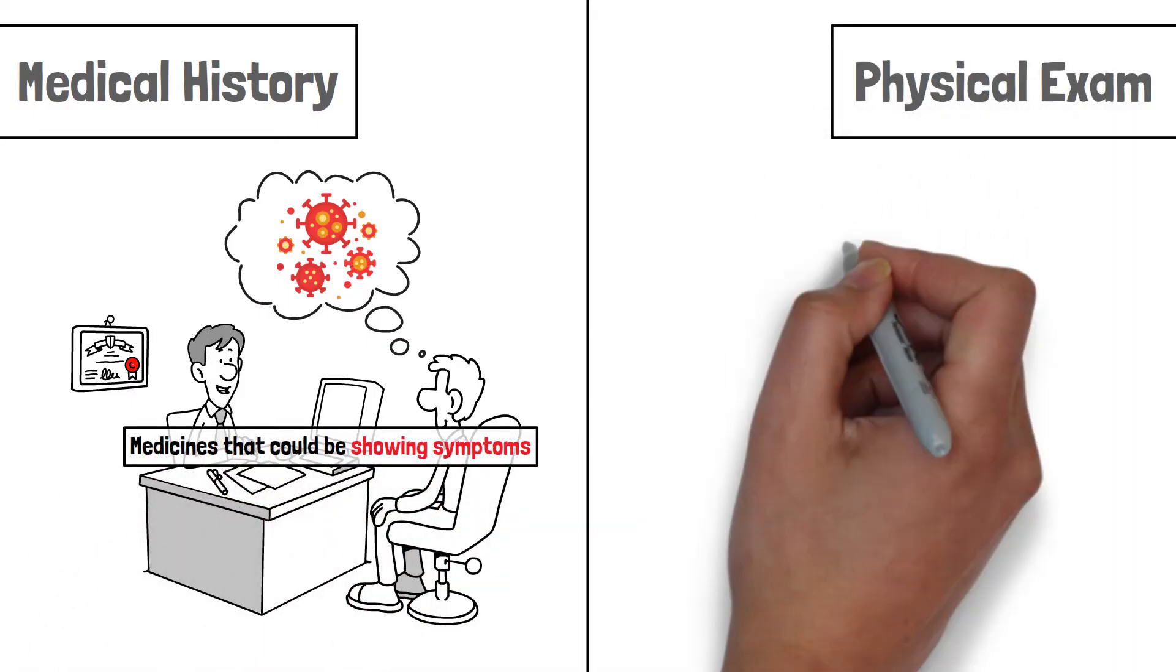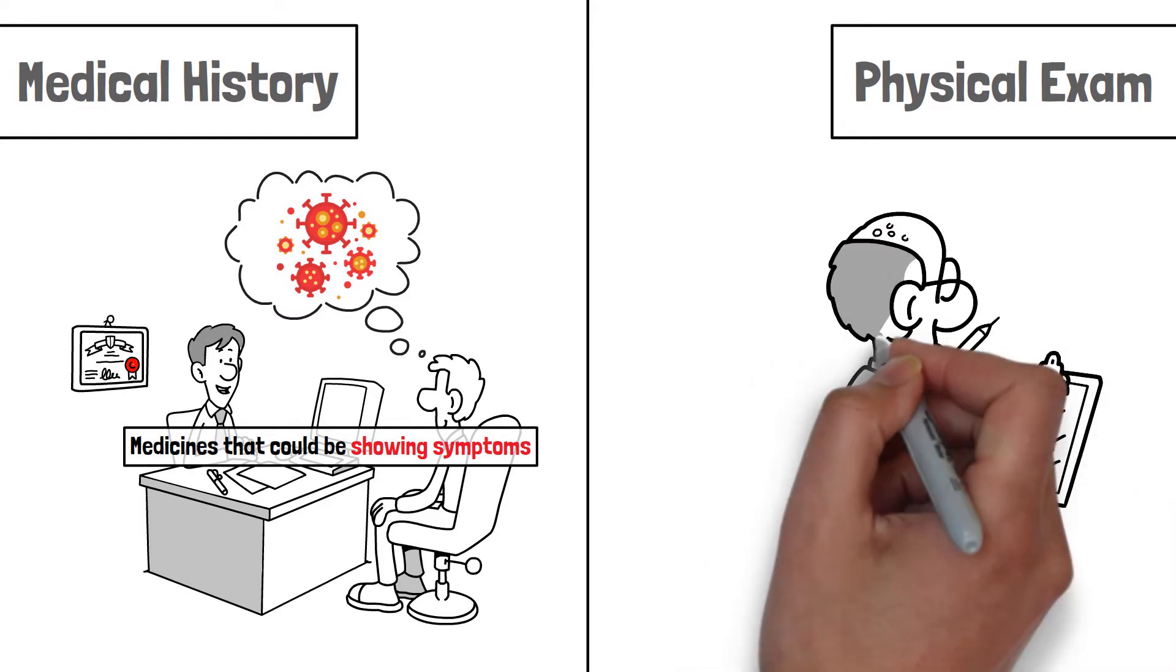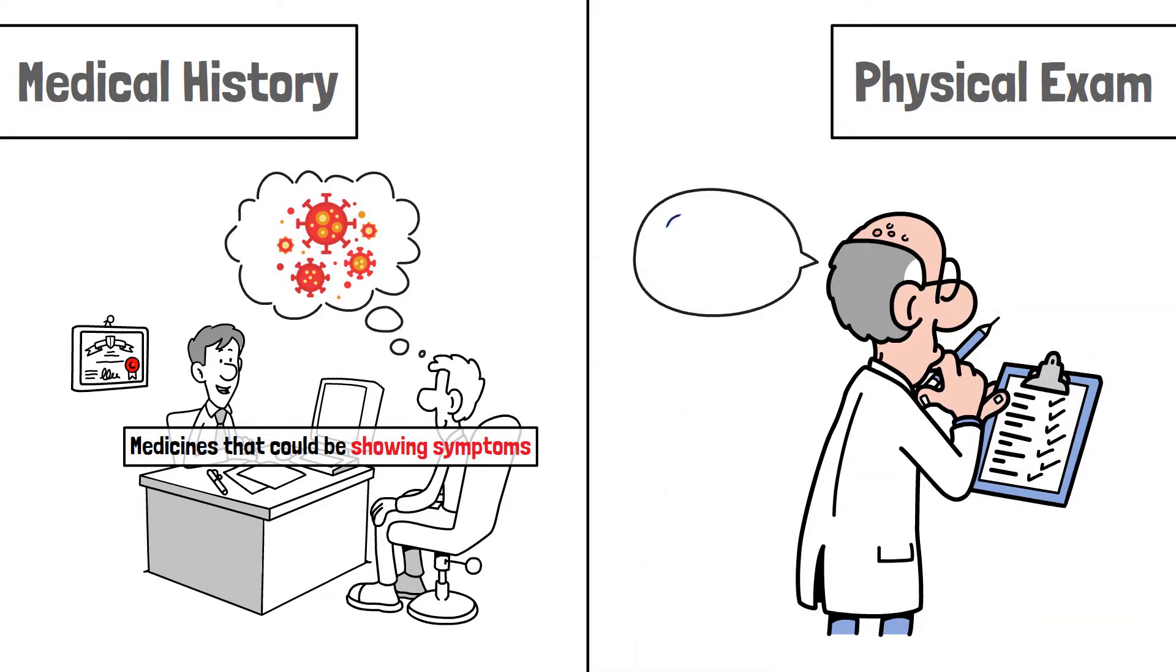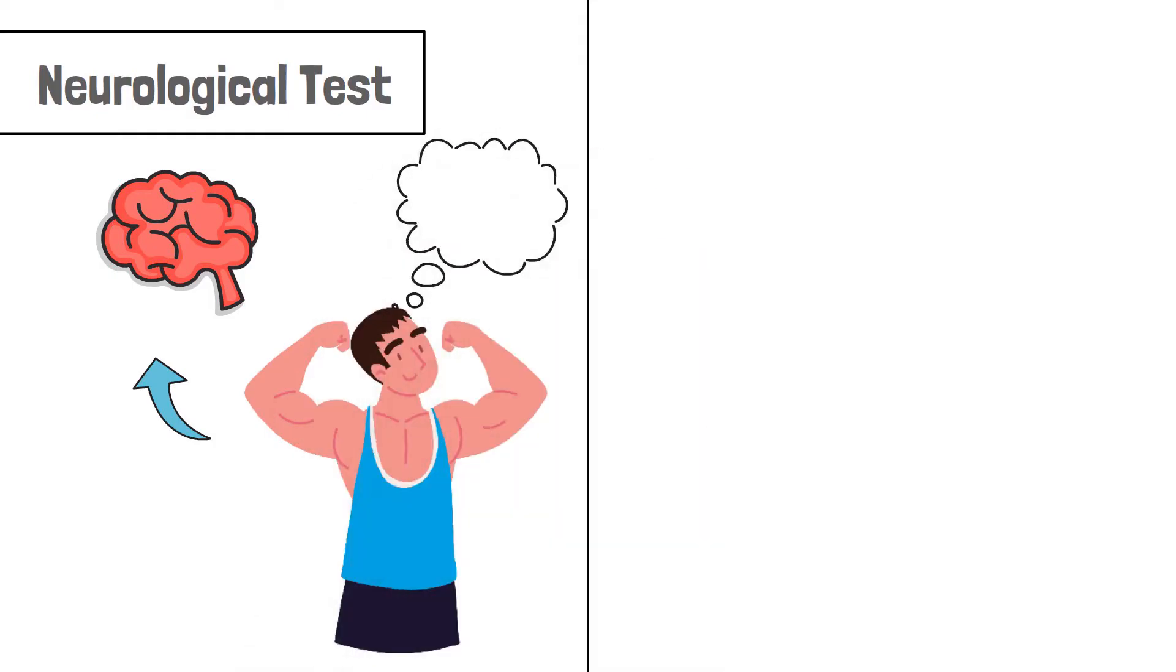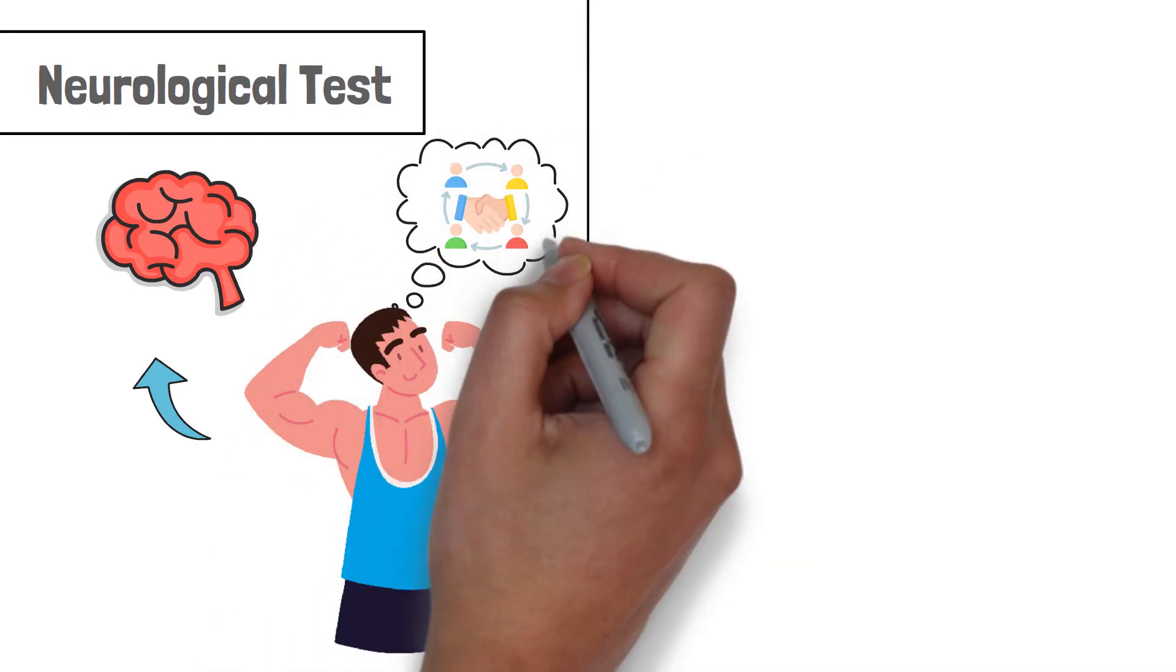Physical exam. This involves the doctor conducting a physical examination, like checking blood pressure, observing the heartbeat, and other basic tests. Neurological test. This includes checking the functioning of the brain and nerves, such as reflexes, muscle strength, muscle tone, senses of touch and sight, balance, and coordination.